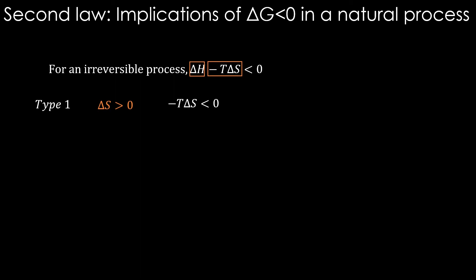In type 1, delta S is positive. So minus T delta S term is negative. And if delta H is less than or equal to zero, then no problem. The delta G will be negative and the process will happen. But if delta H is positive, then its magnitude must not be higher than the magnitude of T delta S. It's necessary. Otherwise delta G would be positive and the process cannot happen.